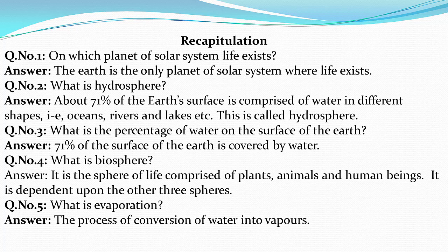Question 3: What is the percentage of water on the surface of the Earth? — 71 percent of the surface of the Earth is covered by water. Question 4: What is biosphere? — It is the sphere of life comprised of plants, animals, and human beings, dependent upon the other three spheres. Question 5: What is evaporation? — The process of conversion of water into vapors is called evaporation.